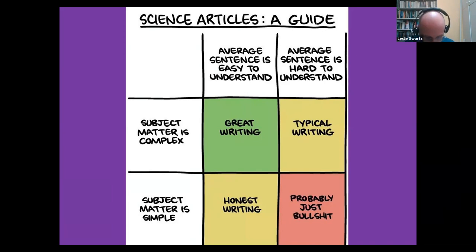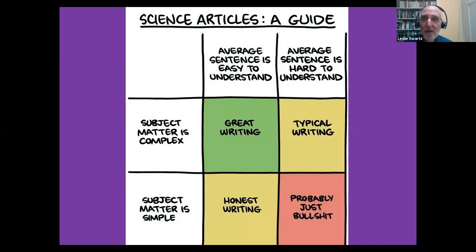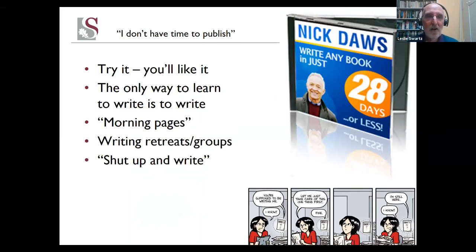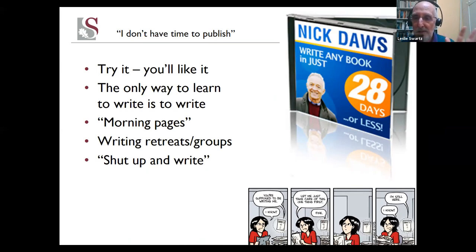When the average sentence is hard to understand and the subject matter is complex, that's where most academics are writing — we don't want that. And particularly in the social sciences, when the average sentence is hard to understand and the subject matter is simple — it's probably just bullshit. Many of you are going to be really challenged in terms of finding time to write. The only way to learn how to write is to write. You've got to make time to write. You attend a million workshops and hear a million people like me telling you what to do — but the only way is to just write.